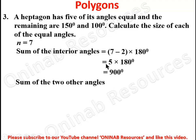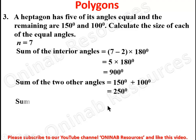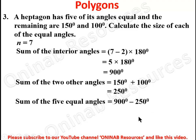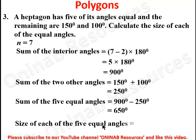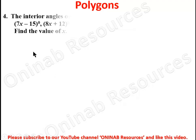The sum of the two unequal angles is 150 plus 100, which gives 250 degrees. The sum of the five equal angles will be 900 minus 250, giving 650 degrees. To find the size of each equal angle, we divide by 5: 650 divided by 5 gives us 130 degrees.